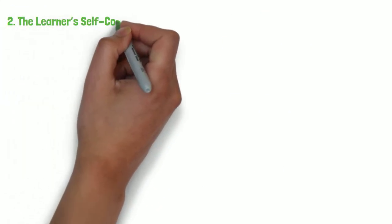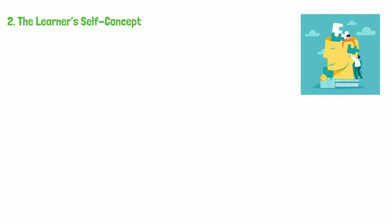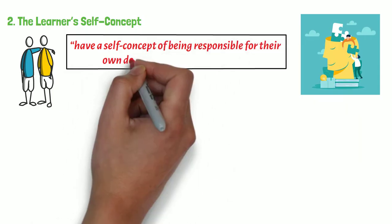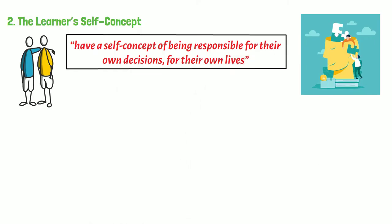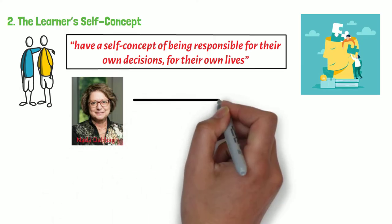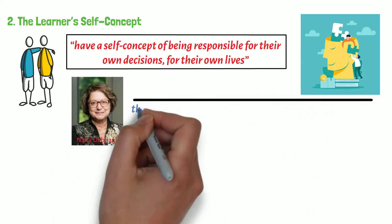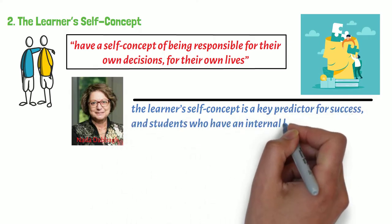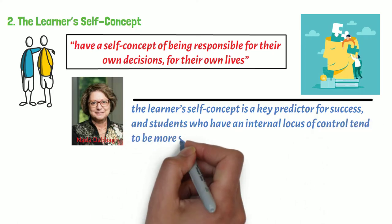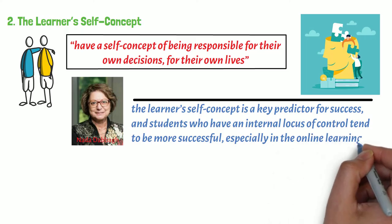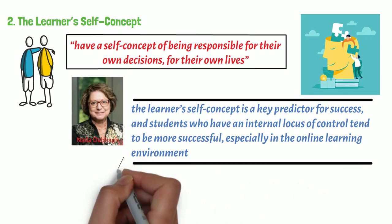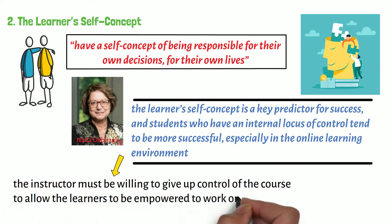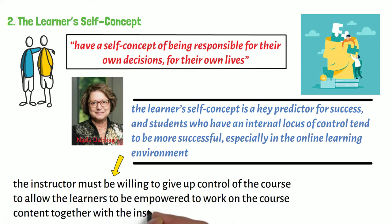Second, the learner's self-concept. The second assumption states that adults have a self-concept of being responsible for their own decisions and their own lives. According to Nader Dabbagh of George Mason University, the learner's self-concept is a key predictor for success, and students who have an internal locus of control tend to be more successful, especially in the online learning environment. For this reason, the instructor must be willing to give up control of the course to allow the learners to be empowered to work on the course content together with the instructor as an equal.